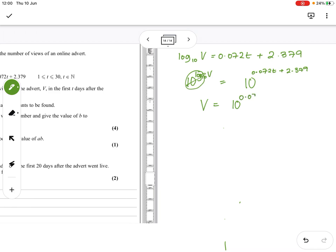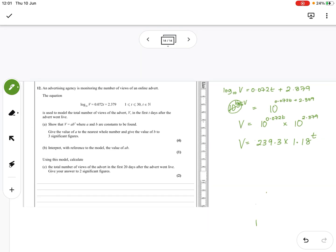We can change this to two separate terms because we know as long as we've got the same base, you add the indices, which is what we would have done. So we've got V equals 10 to the power 2.379 is 239.3, or 239 would probably be fine, and times 10 to the power 0.072, which is 1.18 to the power T. So that would be what I would suggest we're looking for, for this answer. Good.